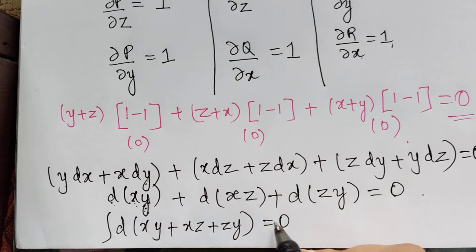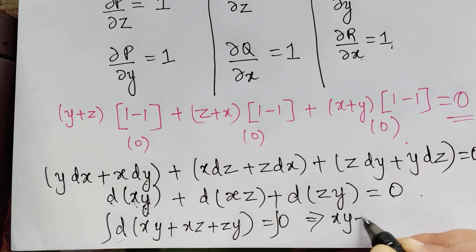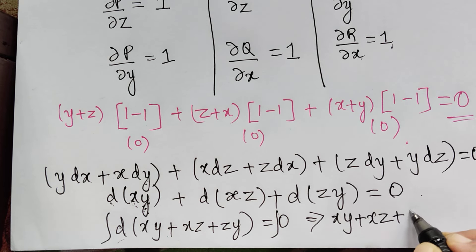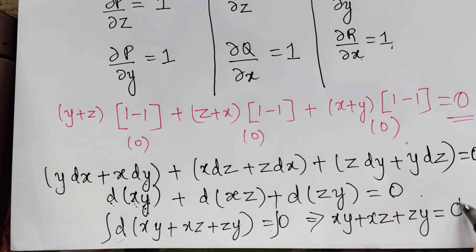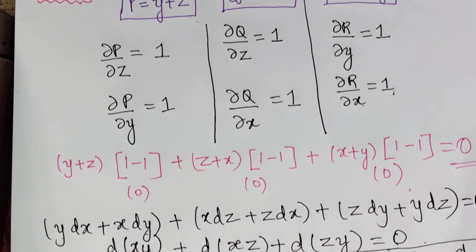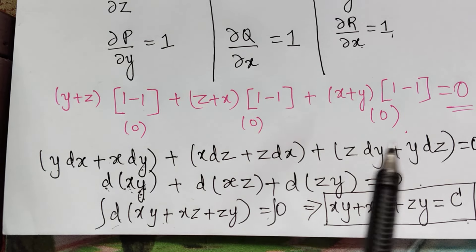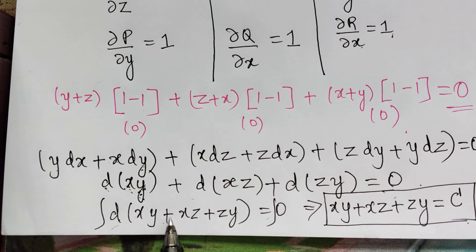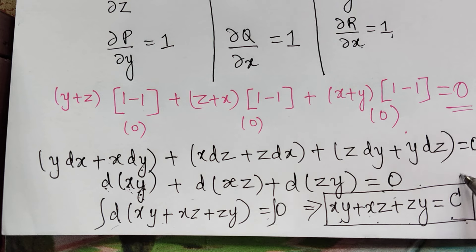Integrating both sides, the integral of a differential gives back the expression itself, and the integral of 0 gives a constant. So the required solution is xy + xz + zy = c. Remember: first check the condition for integrability, then regroup the terms conveniently so that integration is straightforward.